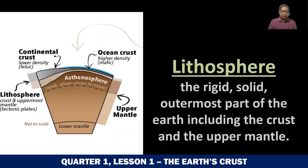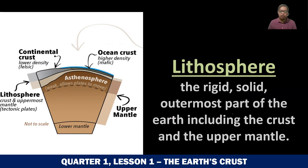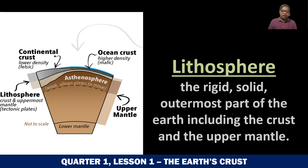The crust, the mantle, and the core are the layers of the Earth based on composition — what they are made of. So if a layer is made of a certain material, it will be classified as crust, mantle, or core. But the lithosphere is another layer of the Earth, which is made up of the crust and the uppermost mantle.